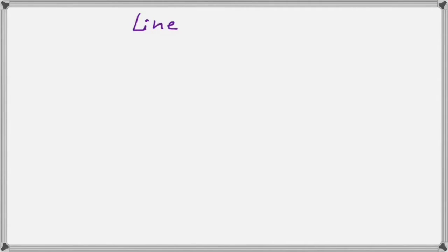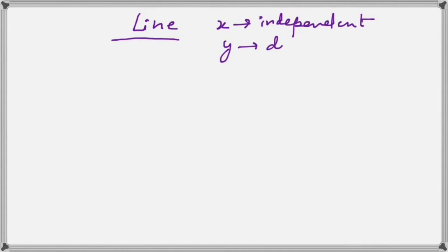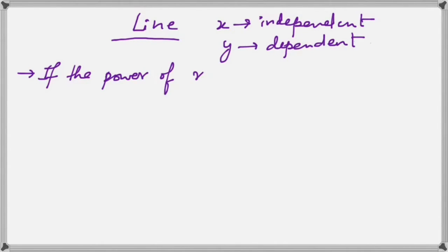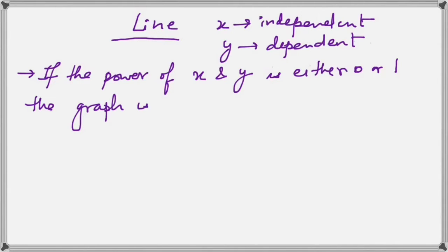Let us look at the first kind of graphs we will encounter, and that is straight lines. When does an equation represent a straight line? We will take x to be the independent variable and y to be the dependent variable. The rule is very simple: if the power of x and y is either 0 or 1, the graph is a straight line.